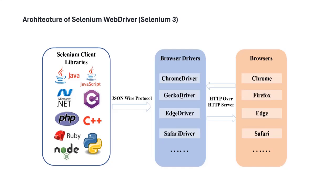If you want to execute using Gecko — Gecko is Firefox — then the Gecko driver will talk to the Firefox browser. Edge driver will communicate with the Edge browser. Safari driver will communicate with the Safari browser. In response, it will give the response back to the browser driver, and finally you will be able to see the result on your IDE. This is how the communication happens, and that communication between the browser driver and the browsers happens over HTTP.